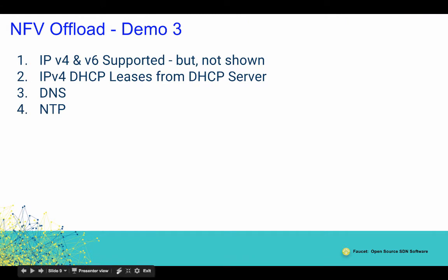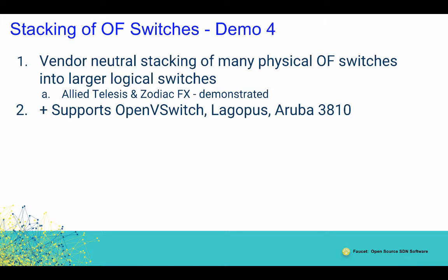I have only configured our DHCP server to support IPv4 at this point in time, but we can actually do IPv6 and the Fawcett SDN controller also supports it. Other kinds of NFV offload that are very common include DNS, NTP, firewalling, and that kind of stuff — we will get to all of those at a different stage. But right now I just wanted to show you the DHCP. With that said, let's go look at how we can manage multiple OpenFlow switches.